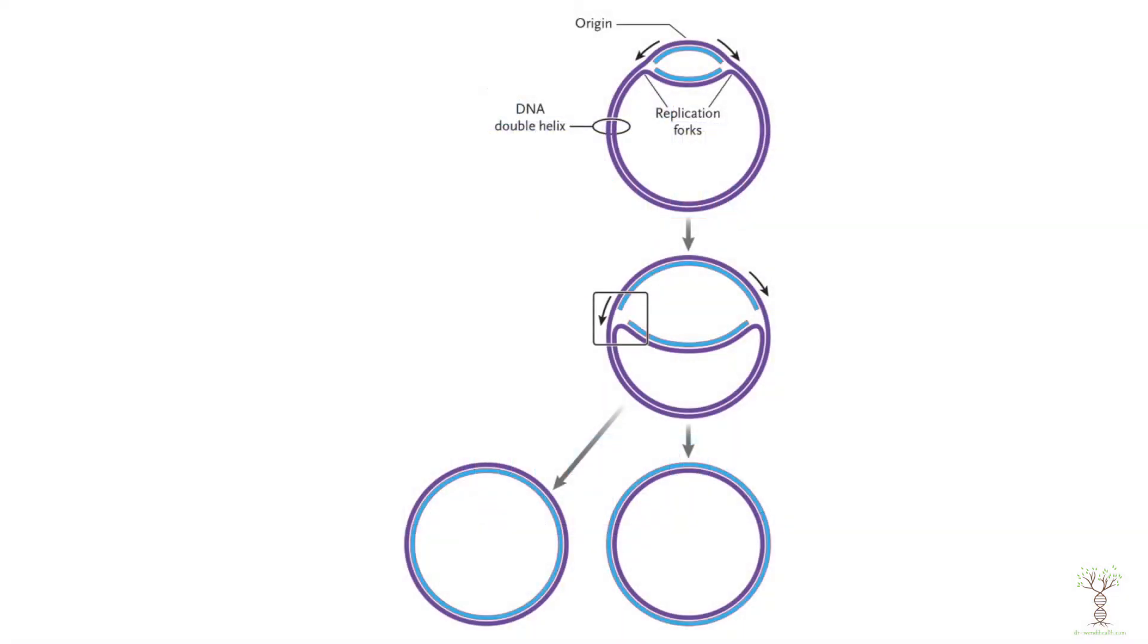The last thing that I want to just show you is that DNA replicates differently in prokaryotes or bacterial cells. Prokaryotic organisms have circular DNA. So they also have an origin of replication but they only have one origin of replication, whereas our chromosomes have multiple origins.